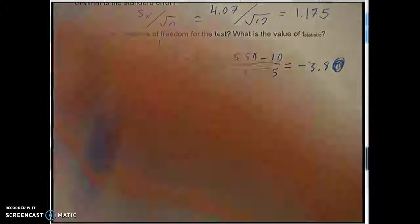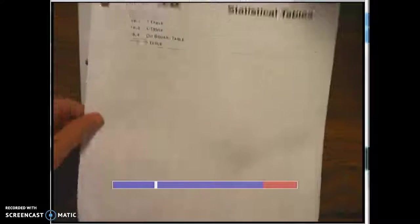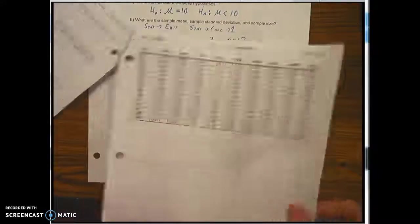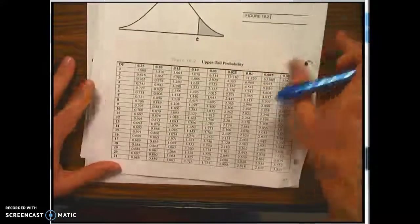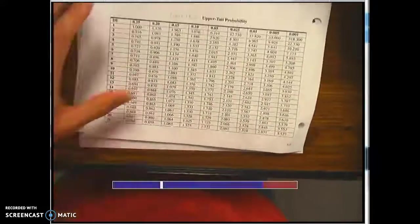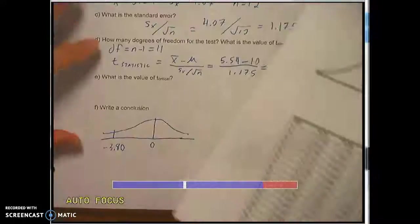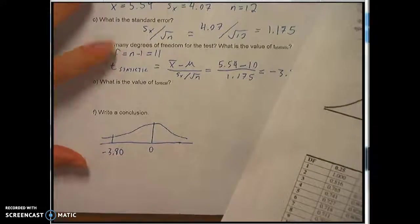Well that comes from this t table that we have here. So I'm going to go past the z table and go into the t table now. And it's much easier to read. Because it's listed by degrees of freedom.